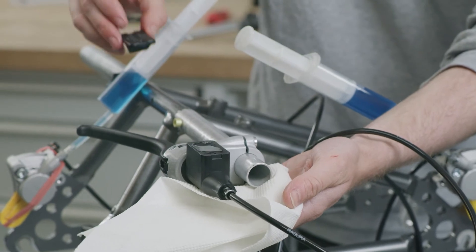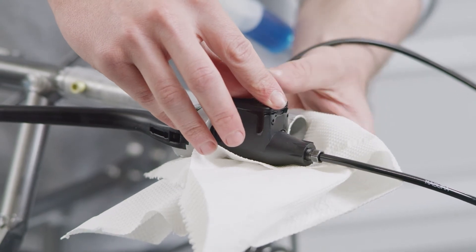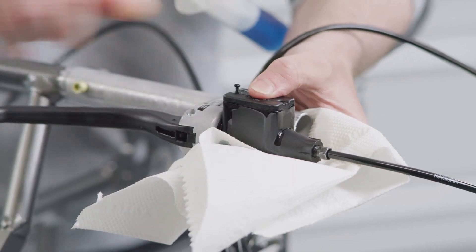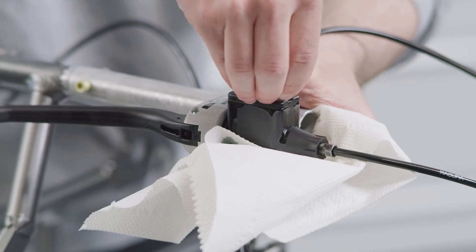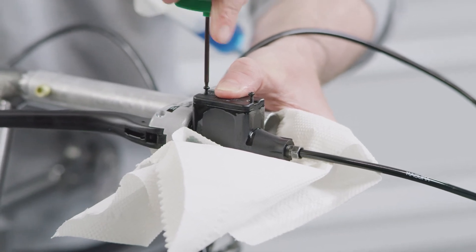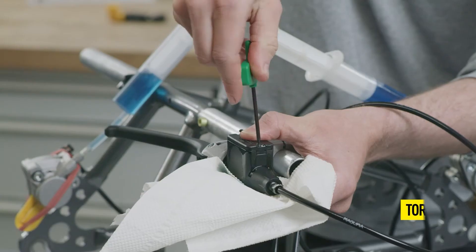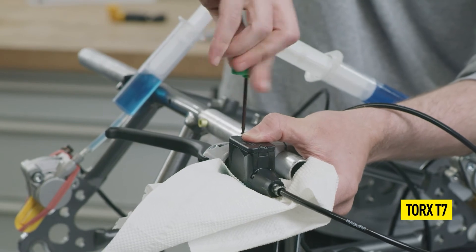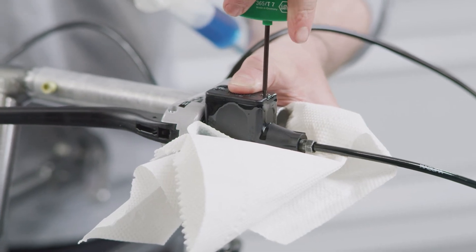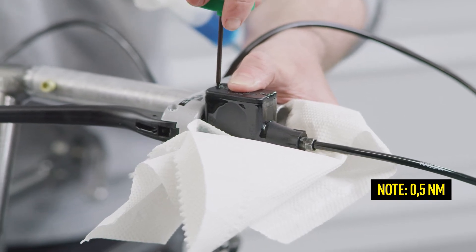Replace the membrane before you close the expansion reservoir. Make sure that the membrane is correctly placed in its recess on the master cylinder and has no creases. Now, close the lid of the expansion reservoir and secure it with the two screws. The maximum torque is 0.5 Nm.